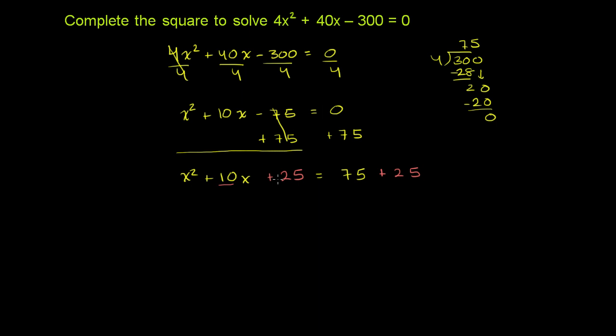And now we see that this is a perfect square. We say, what two numbers? If I add them, I get 10. When I multiply them, I get 25. Well, that's 5 and 5. So when we factor this, what we see on the left-hand side simplifies to x plus 5 squared, x plus 5 times x plus 5. And you can look at the videos on factoring if you find that confusing. I encourage you to square this and see that you get exactly this. And this will be equal to 75 plus 25, which is equal to 100.